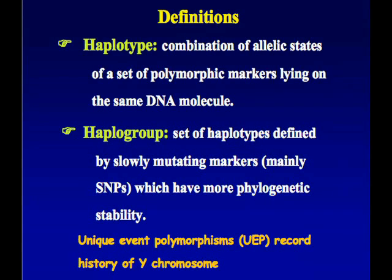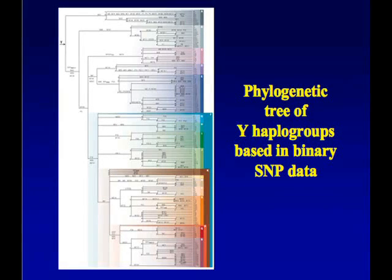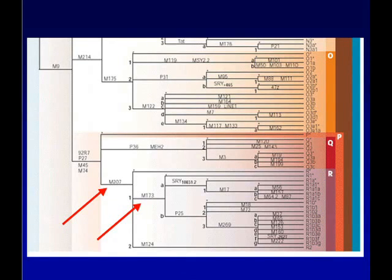Everybody who has the other allele state would belong to any of the other haplogroups. For forensics, we'll just show a couple of examples so you can appreciate it. This is a tree based on SNP data defining different haplogroups — a particular site defines one haplogroup here, separating it from all other haplogroups, and then other SNPs define further subdivisions down the line. This breakdown shows it in a more enlarged feature so you can appreciate the structure better.